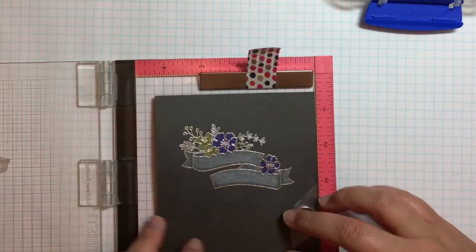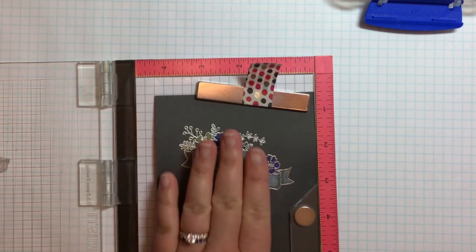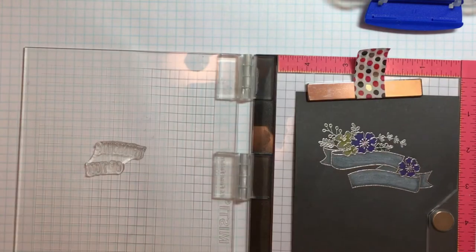Next, I stamped the sentiment from Blossoms and Banners with Versamark, and heat embossed it with the same silver embossing powder.